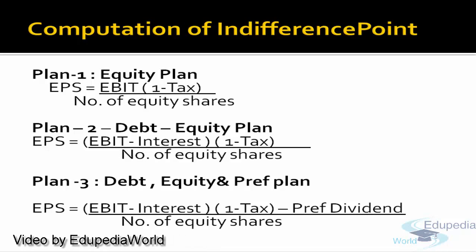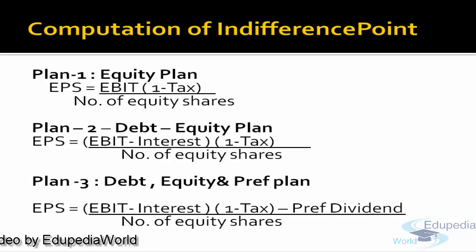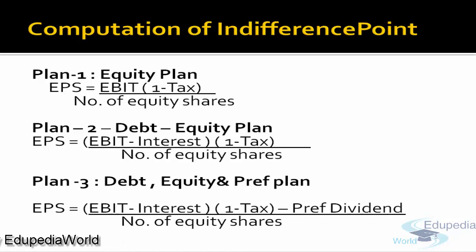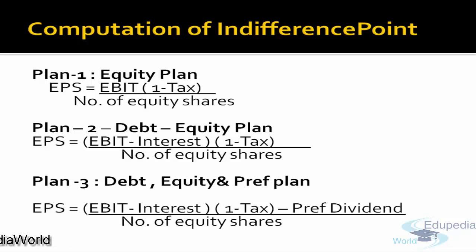The other third possibility of a capital structure is the company could have preference dividend also. So if a company has preference dividend, to compute earning per share, we will first reduce the interest portion, then reduce the tax portion, and from that amount reduce the dividend paid to the preference shareholders. The net amount is the earning available for equity shareholders, and we divide it by the number of equity shares to get the EPS.